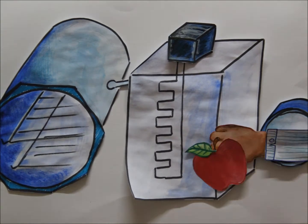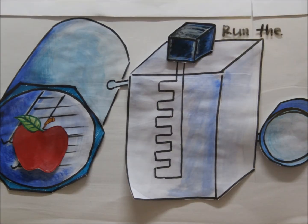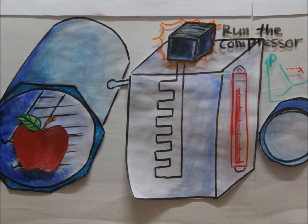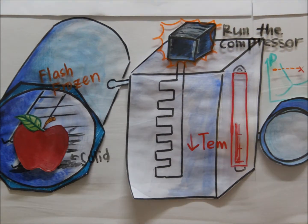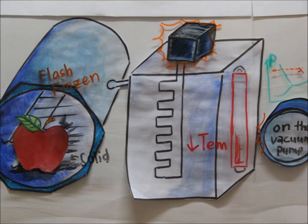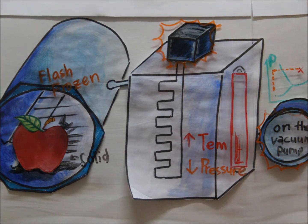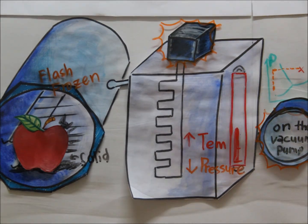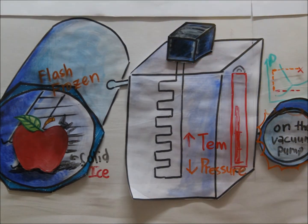Let's take food as an example. The compressor is run to lower the temperature in the chamber. The food is flash-frozen by placing it onto the heated shelves. After that, the vacuum is turned on to remove air out of the chamber by lowering the pressure.